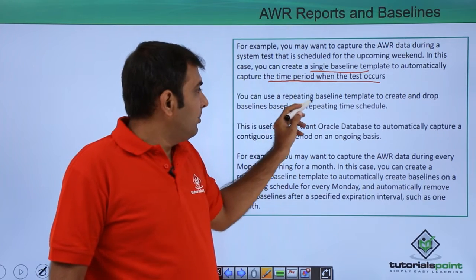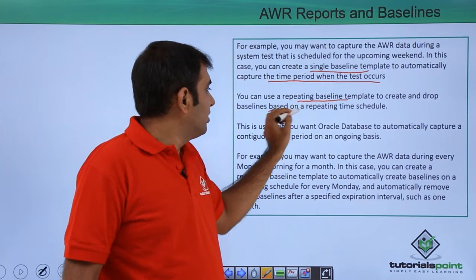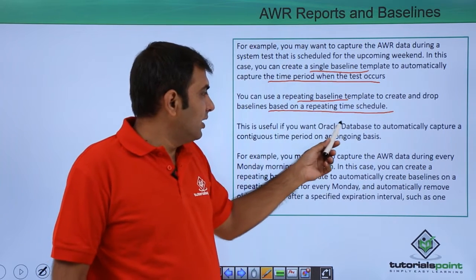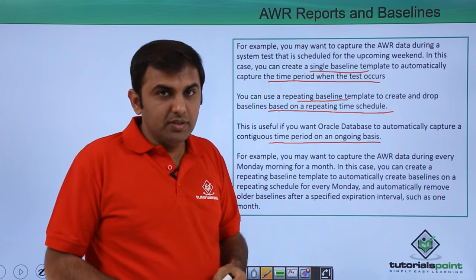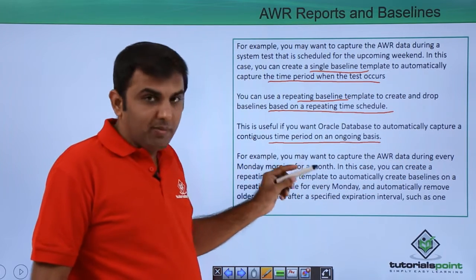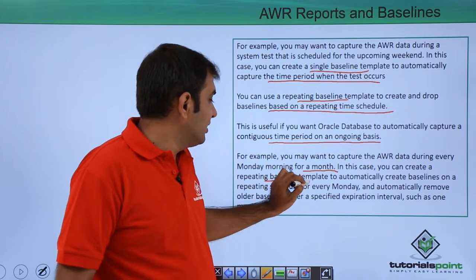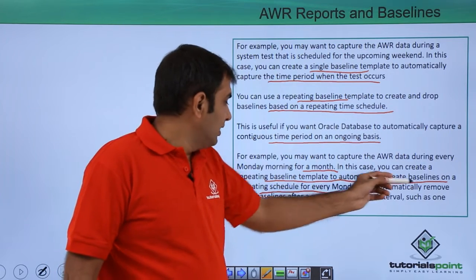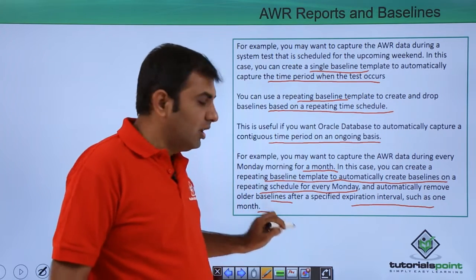You can use the repeating baseline template to create and drop baselines based on a repeating time schedule. This is useful if you want Oracle Database to automatically capture a continuous time period on an ongoing basis. For example, if you want to capture AWR data every Monday morning for a month, you can create a repeating baseline template that automatically creates the baseline on a repeating schedule for every Monday and automatically removes older baselines after a specified expiration interval, such as one month.